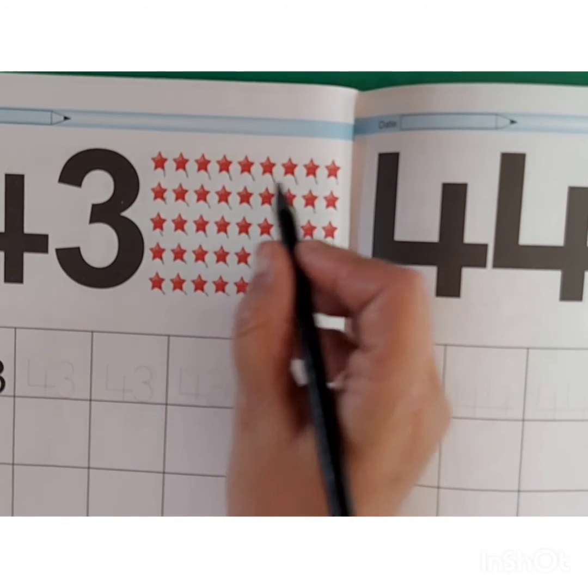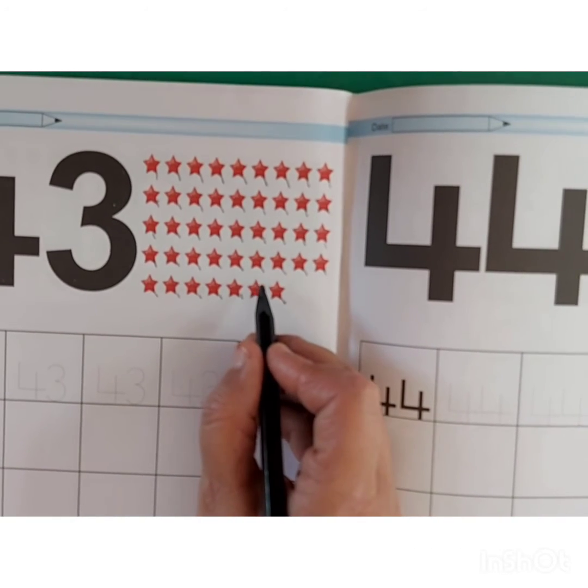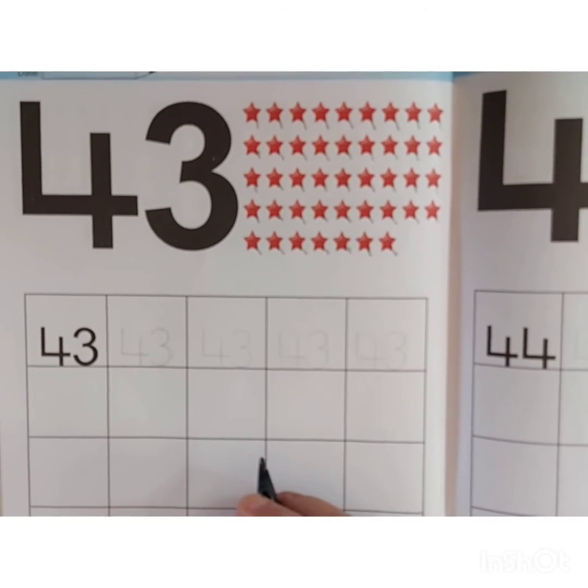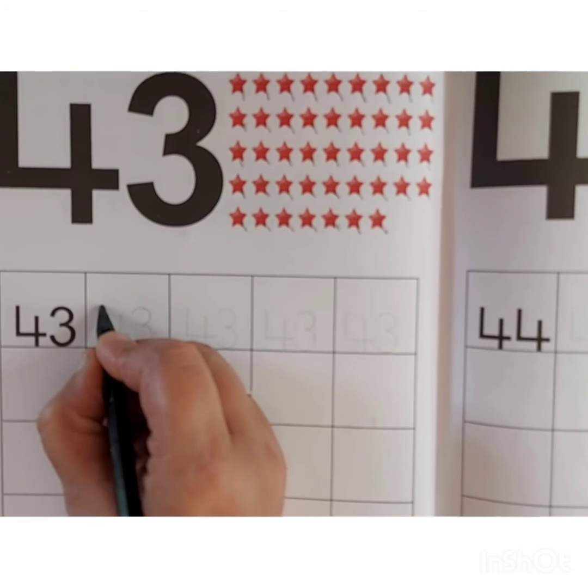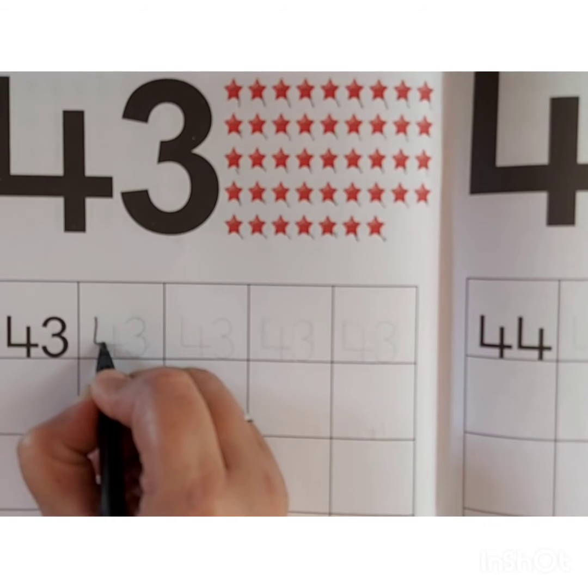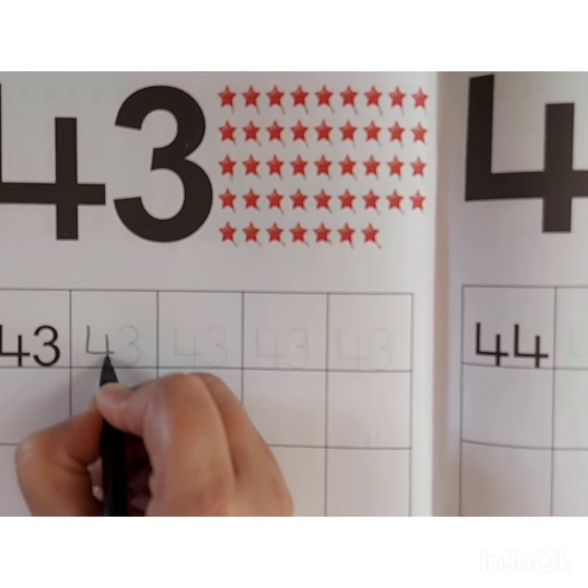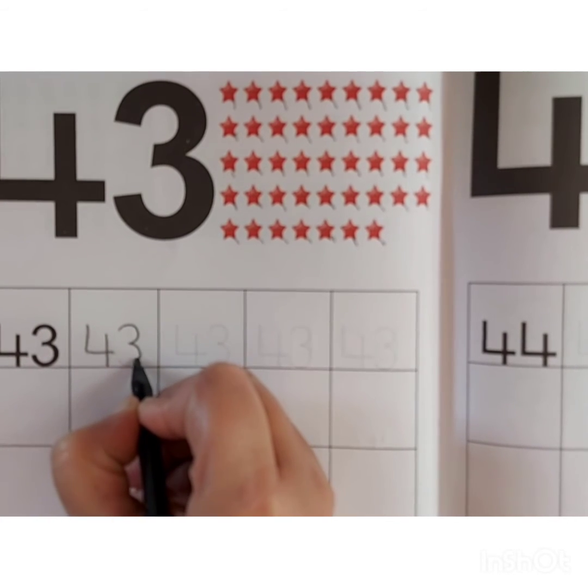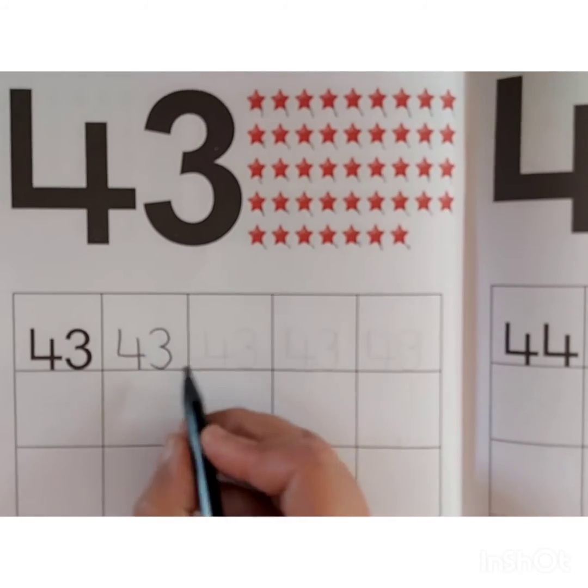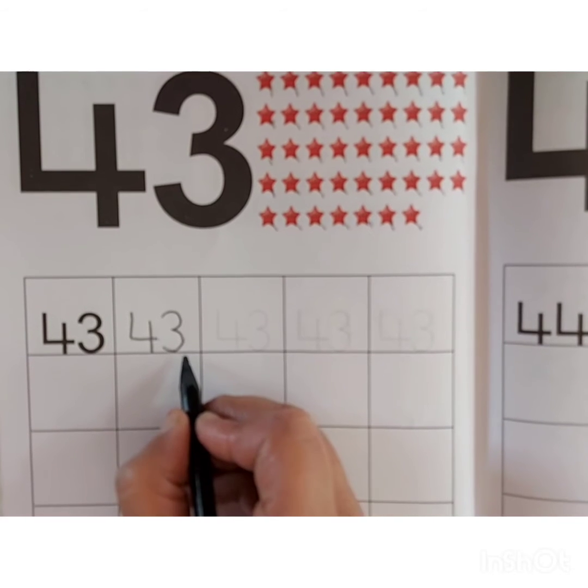So, there are 43 stars. Now we will trace number 43. First we will trace number 4. Then number 3. 43.